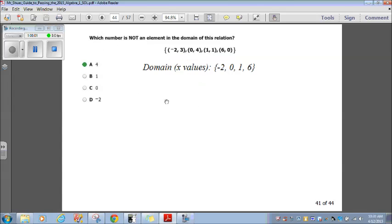Let's go on. Which number is not an element in the domain of this relation? Now, you remember domain are simply your X values. So, my X values are negative 2, 0, 1, and 6, which I've written here. So, I'll just look at my answer choices here. 4 is not included in the domain. So, 4 is my answer here. That one's pretty simple.